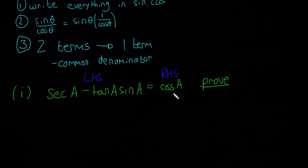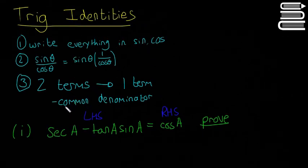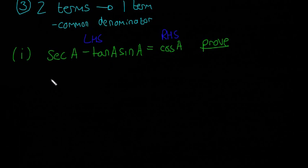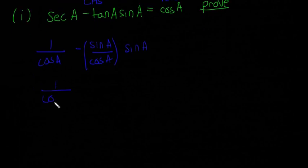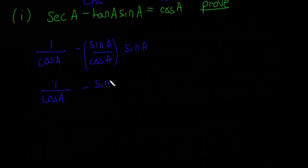Don't bring the cos(a) from the right-hand side into it — leave the right-hand side as it is and just manipulate the left-hand side. The first step is to write everything in terms of sine and cosine. So sec(a) is 1 over cos(a), minus tan(a) which is sine(a) over cos(a), and that's multiplied by sin(a). The next step is to multiply sine(a) by sine(a), giving us 1 over cos(a) minus sine squared(a) over cos(a).